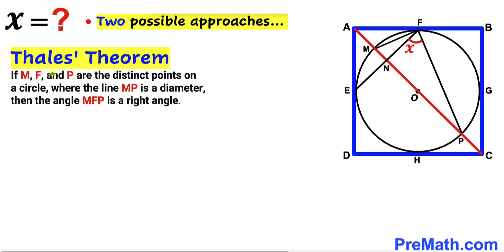According to Thales' theorem, if M, F, and P are three distinct points on a circle where line MP is the diameter, then angle MFP is a right angle — in other words, exactly 90 degrees. So angle MFP is our 90-degree angle.